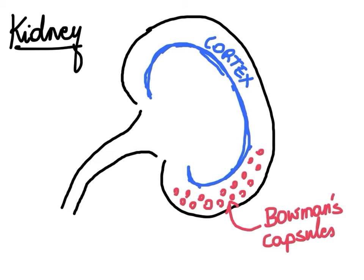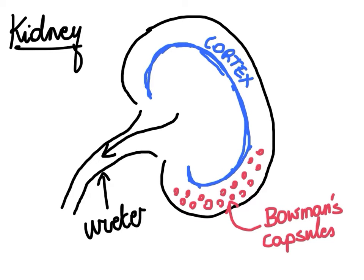When they filter our blood, eventually the filtrate becomes urine, and this urine will then leave the kidneys via what we refer to as our ureters. These ureters will then merge with our bladder.